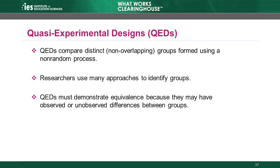A simple QED identifies a group of units that received an intervention and compares that group to a group of units that did not receive the intervention. Researchers can choose these groups in many ways, which we will discuss next. Because the groups are not the result of random assignment, the QED approach does not provide any guarantee the groups are similar on observed characteristics.